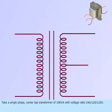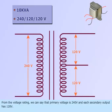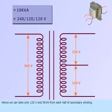Take a single-phase center tap transformer of 10 kVA with voltage ratio 240 by 120 by 120 volts. From the voltage reading, we can say that the primary voltage is 240 volts and each secondary output has 120 volts. Hence, we can take only 120 volts and 5 kVA from each half of secondary winding.